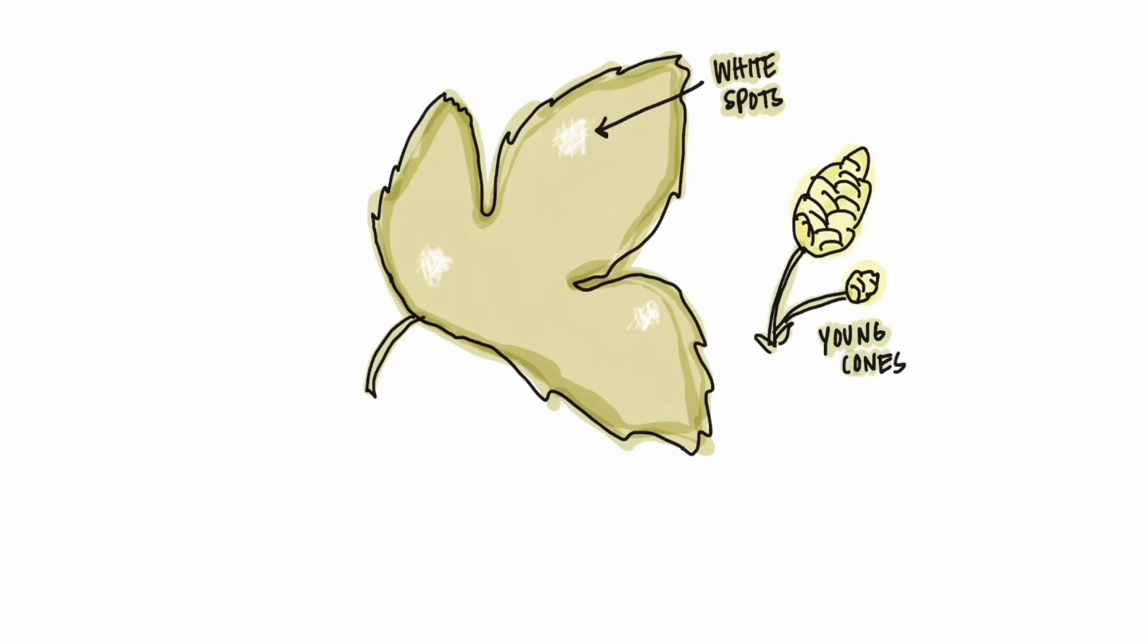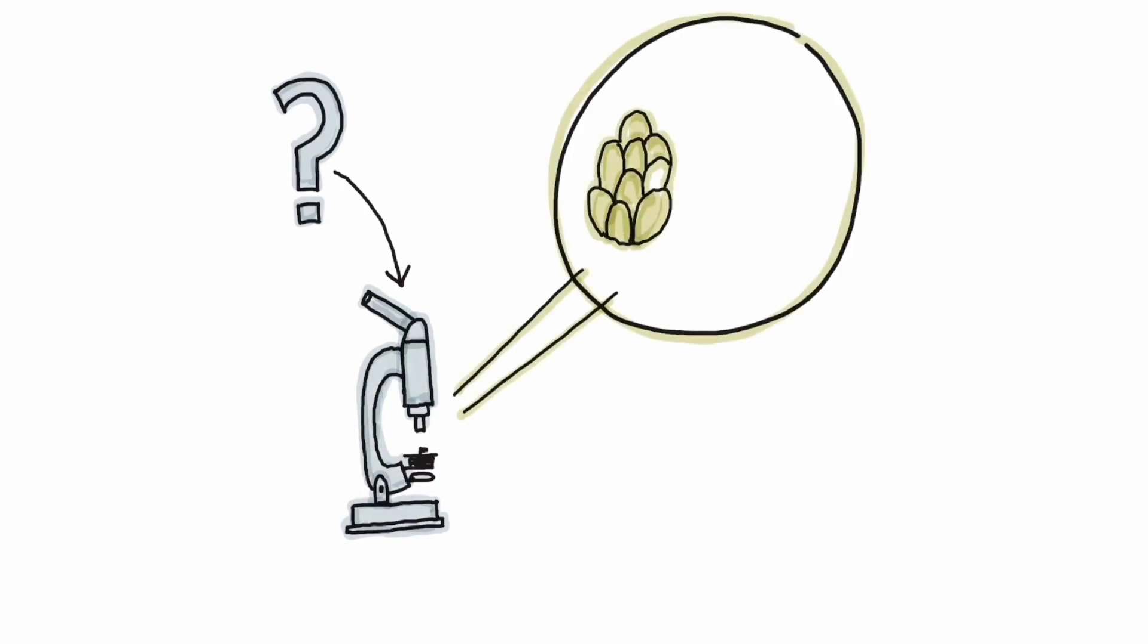Symptoms generally are conspicuous on leaves and appear as powdery white spots. Severe infection at bloom or on young cones causes their abortion or severe distortion. Infection of cones later in their development can be much more difficult to diagnose and often requires a microscope to confirm the sparse growth of the fungus on the undersides of bracts.